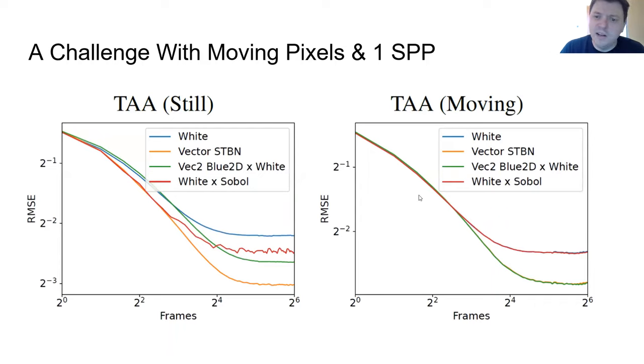And then on the right where we have a moving scene our spatial temporal blue noise in orange matches the 2D blue noise in green.